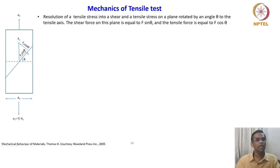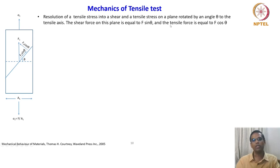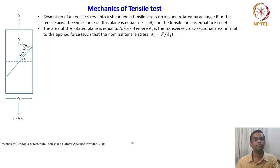The shear force is F₁ sin θ and the tensile force is F₁ cos θ. The force acting on this rotated plane is not just F₁, but F₁ cos θ is the magnitude of the tensile force acting on it. The area of the rotated plane is equal to A₁/cos θ, where A₁ is the transverse cross-sectional area normal to the applied force, such that the normal tensile stress σ₁ = F/A₁.